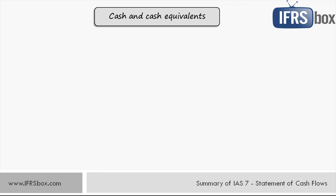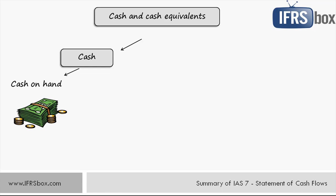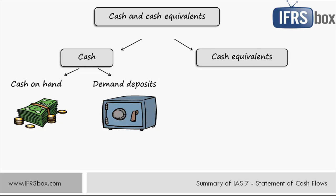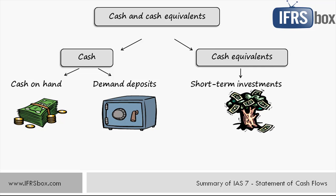IAS 7 defines cash and cash equivalents as slightly more complex than you would expect. Cash includes cash on hand — basically petty cash — and demand deposits, that's current bank accounts. Cash equivalents are short-term highly liquid investments that are readily convertible to known amounts of cash and subject to an insignificant risk of changes in value. An investment normally qualifies as a cash equivalent only when it has a short maturity — no more than three months from the date of acquisition.